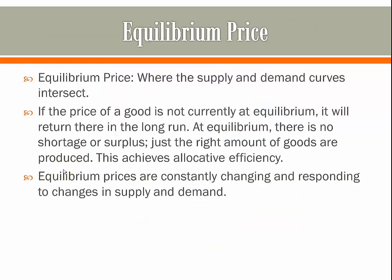The equilibrium price is where the supply and demand curves intersect — it's like a market-tested perfect price and perfect quantity. If the price of a good is not currently at equilibrium, it will return there in the long run. Let's say I'm Coca-Cola selling a soda for $20 — not many people want to buy it, so they have too much soda and have to lower the price, and keep doing so until supply equals demand. If the price is too low, too many people want Coca-Cola and they can keep raising the price until it reaches the perfect amount. This achieves allocative efficiency, where just the right amount of goods are being sold at the right price.